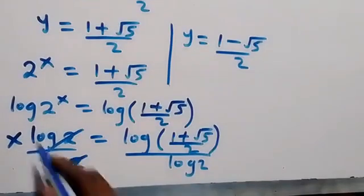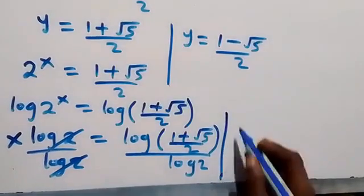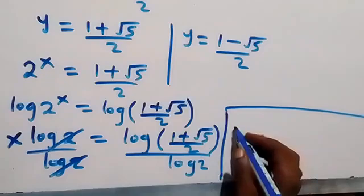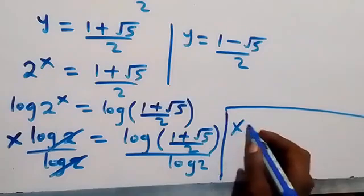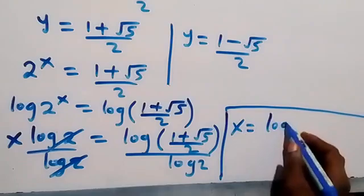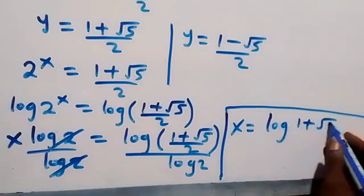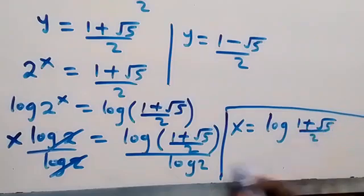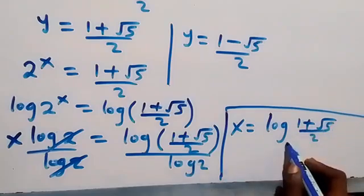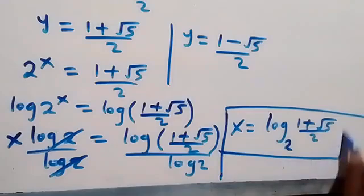From here we have x equals to log of (1 plus root 5) over 2. Then by the change of base rule, we can write this with base 2. So x equals to log base 2 of (1 plus root 5) over 2.